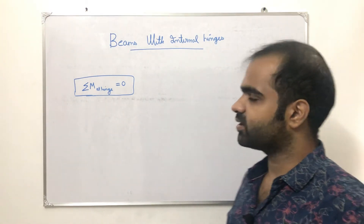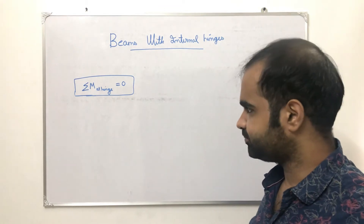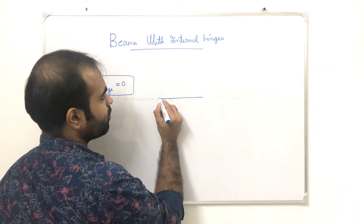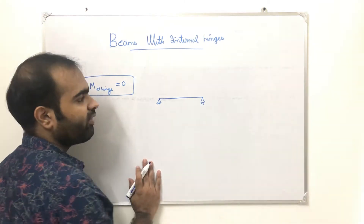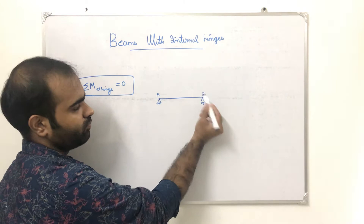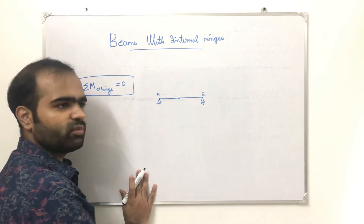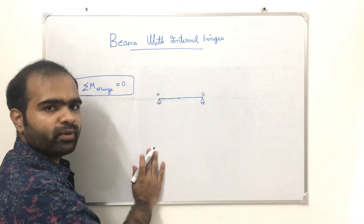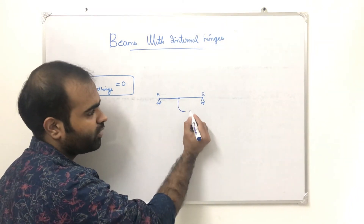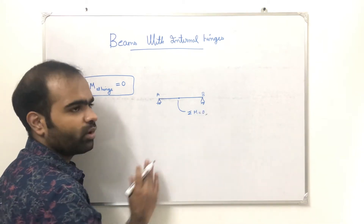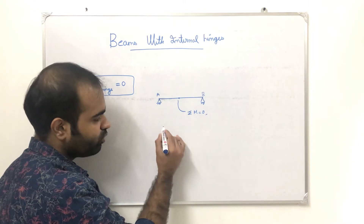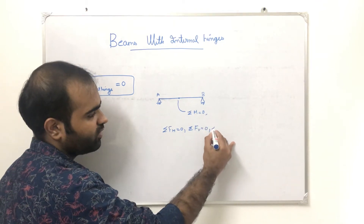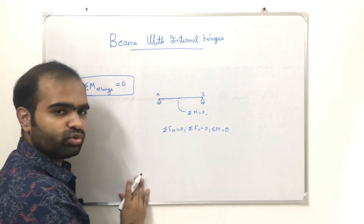If you are using internal hinges, you can see the beam with internal hinges. This is a simply supported beam. The equations of equilibrium are: sigma F = 0, sigma V = 0, sigma M = 0. This is how we get three equations of equilibrium.